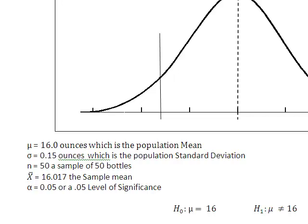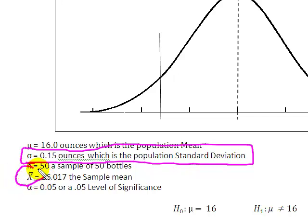We use, remember going back to that other chapter, we use a Z when the standard deviation of the population is known. Well, the standard deviation of the population is given in the problem as 0.15 ounces, which means we're going to use the Z score, the Z score formula when a population standard deviation is known and we are dealing with X bar.